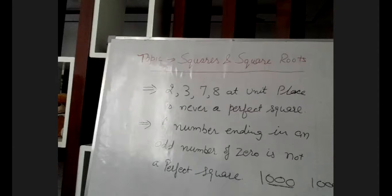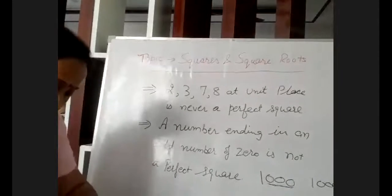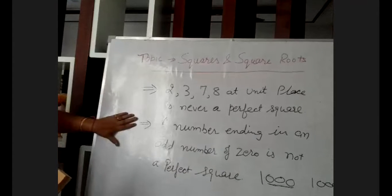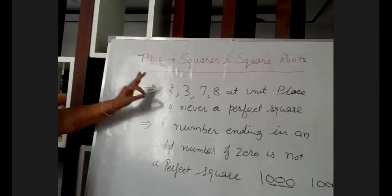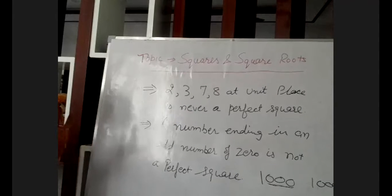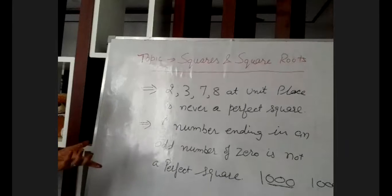The third property: the square of an even natural number is even and the square of an odd natural number is odd. To summarize: first, a number ending with 2, 3, 7, and 8 is never a perfect square. Second, a number ending in an odd number of zeros is never a perfect square. Third, the square of an odd number is odd and of an even number is even.